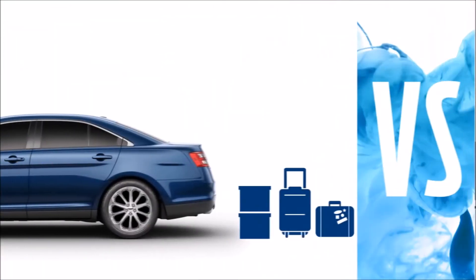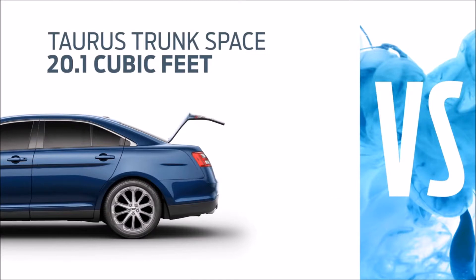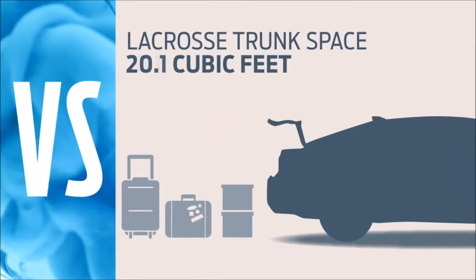Taurus is also big on trunk space with 20.1 cubic feet. LaCrosse only has 13.3 cubic feet.